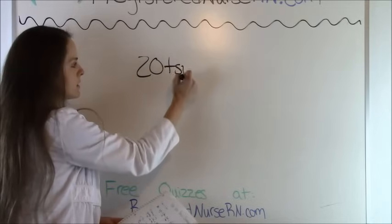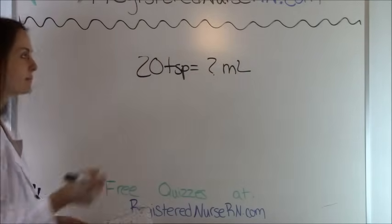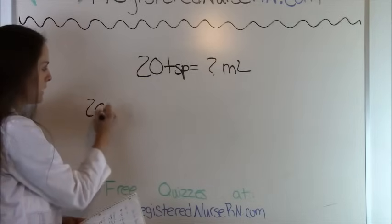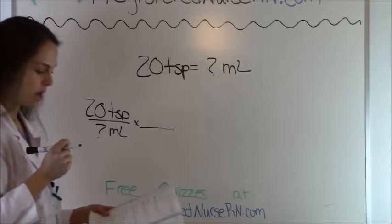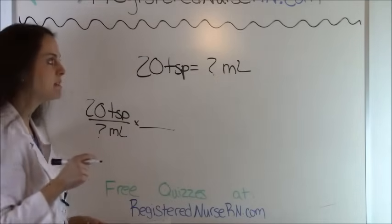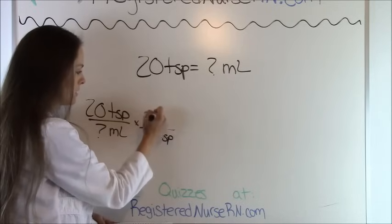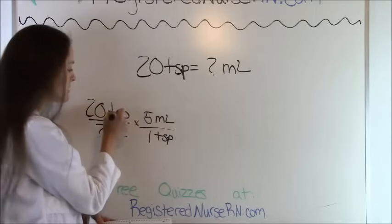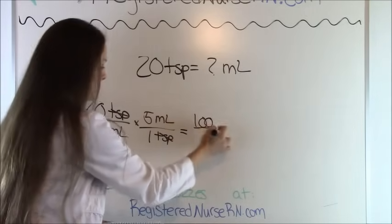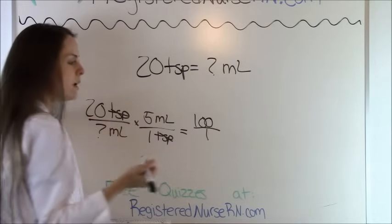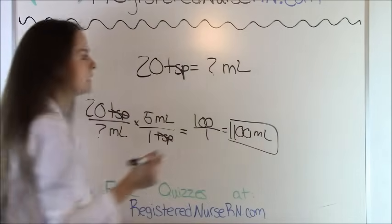Problem six: 20 teaspoons equals how many milliliters? Set up: 20 teaspoons equals how many milliliters. From the metric table, we know 1 teaspoon equals 5 milliliters, since we're going from teaspoons to milliliters. Teaspoons cancels out. Multiply on top: 20 times 5 is 100. On the bottom is just 1. 100 divided by 1 equals 100. So there are 100 milliliters in 20 teaspoons.